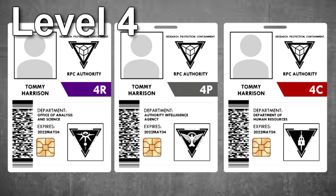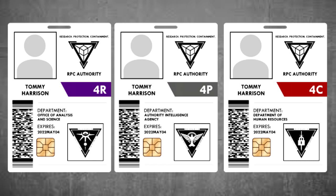Level 4 security clearances are assigned to senior administrative officials that require access to operational data of regional and site operations, along with strategic intelligence regarding authority operations and research projects. Personnel with Level 4 clearance are generally assigned to high-level leadership positions, such as regional directors, site directors, departmental heads, and mobile specialized team commanders.